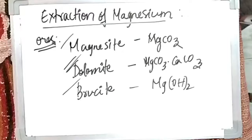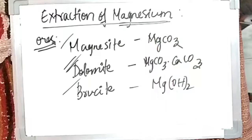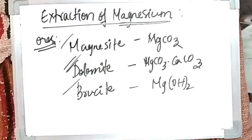Now, why do we extract magnesium? What are its important properties and applications? If you recall, we discussed desulphurization — magnesium granules are used as an important desulphurizing agent or desulphurization reagent. This means magnesium is also used in secondary steel making, making it one of its major applications.